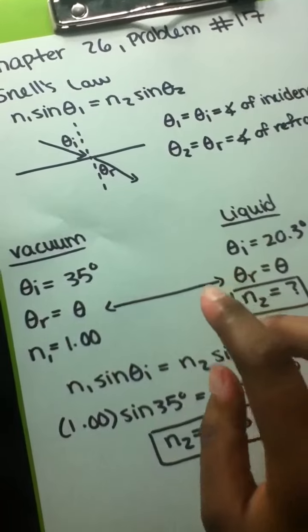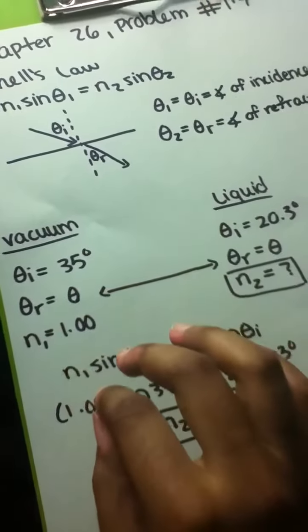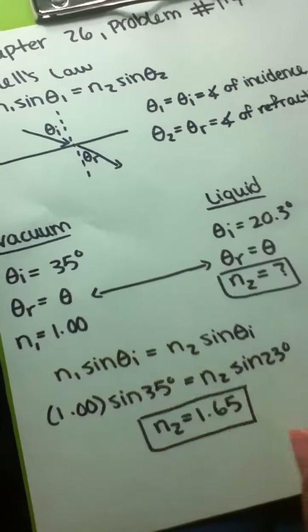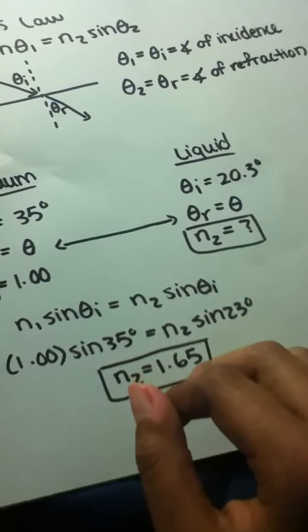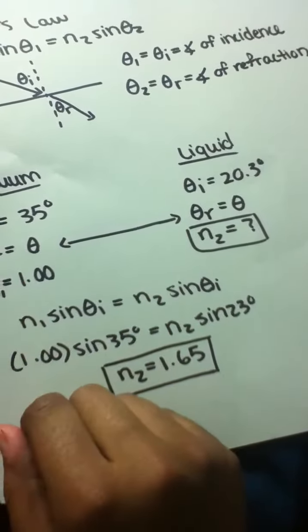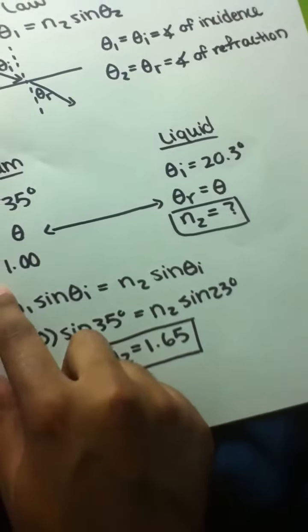In each scenario, we are told the angle of incidence, and we are also told that the angle of refraction for both scenarios are equal to one another. Therefore, we can write two equations and set them equal to one another, because we know that the refractive index in air or in the vacuum is equal to one.